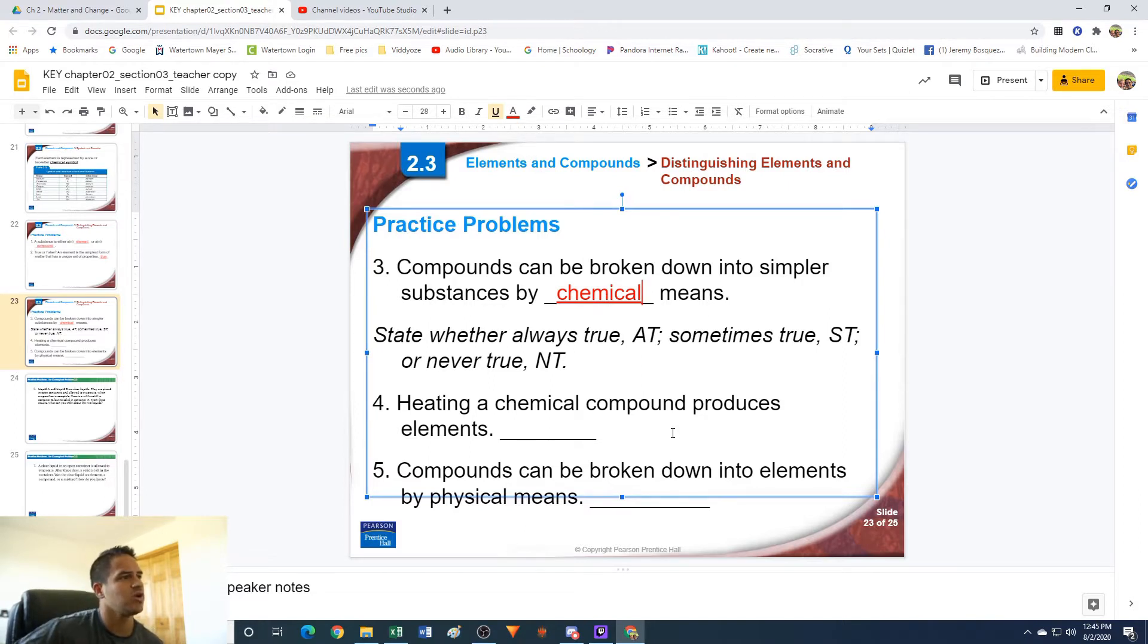Number four: state whether always true, sometimes true, or never true. Heating a compound produces elements. That is sometimes true, not always. Heat is usually a very good way of breaking down a compound, but not all compounds can be broken down using heat, so only sometimes, not always.